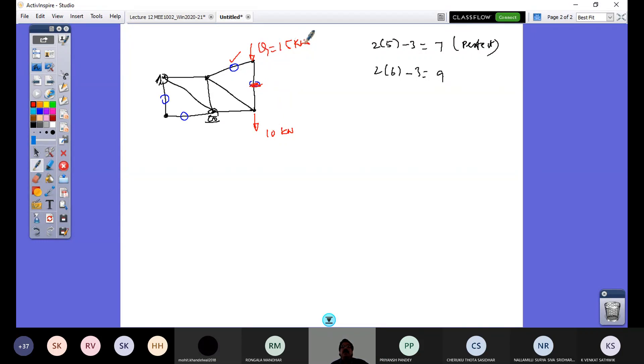So in absence of 15 kilonewton, both were zero force member, but now it is changed. Say for example, now I have a load here in this horizontal direction, say some 20 kilonewton load. Then what would happen? This is not zero force member.